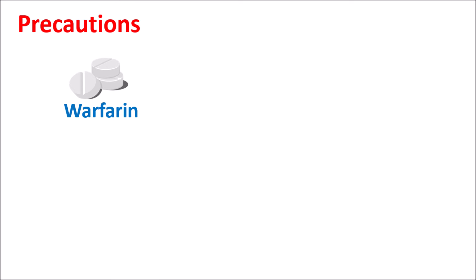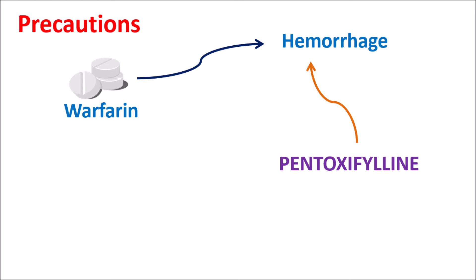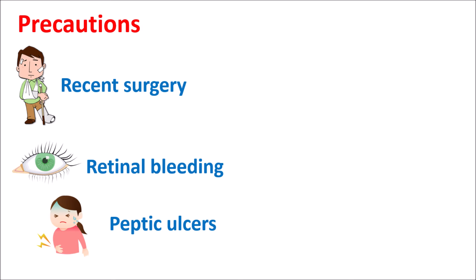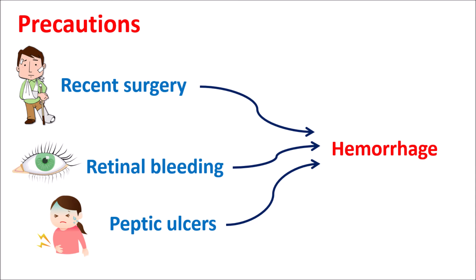Another important precaution concerns warfarin, an oral anticoagulant that can produce hemorrhage. When warfarin is combined with Pentoxyphilin, the risk of hemorrhage is more pronounced because Pentoxyphilin reduces clot formation and increases blood flow. So the warfarin dose should be adjusted and risk of hemorrhage monitored. Similarly, in conditions like recent surgery, retinal bleeding, or peptic ulceration where risk of bleeding is already increased, Pentoxyphilin can further increase the risk of hemorrhage and these factors should be checked before use.